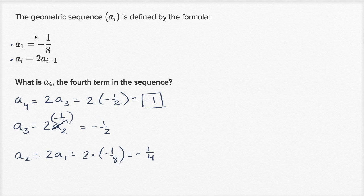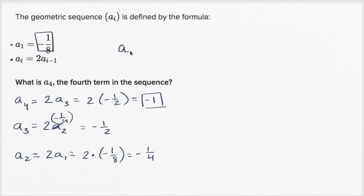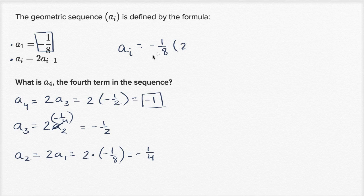Another way to think about it: we have our initial term and we know our common ratio — each successive term is two times the term before it. So we could write this explicitly. This is a recursive definition for our geometric series, but we could explicitly write it as a_i equals our initial term, negative one eighth, times two to the power of i minus one.